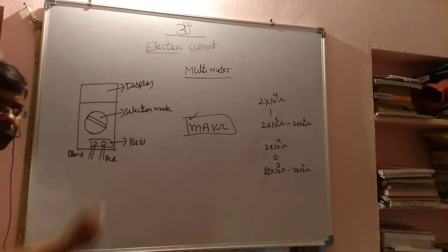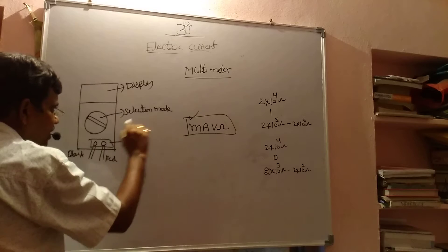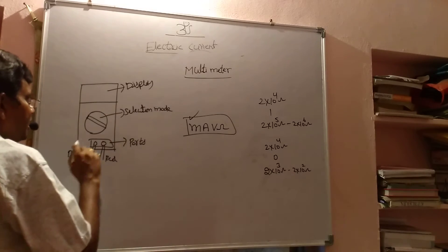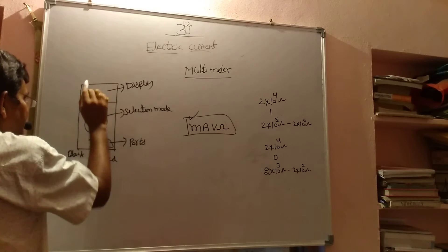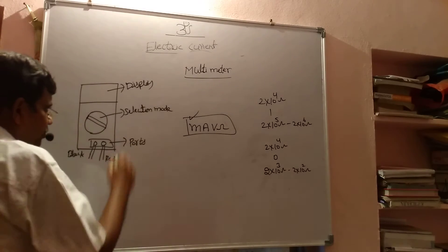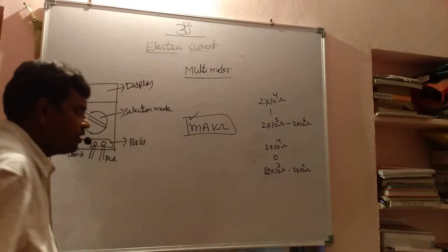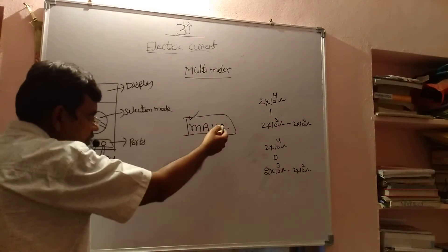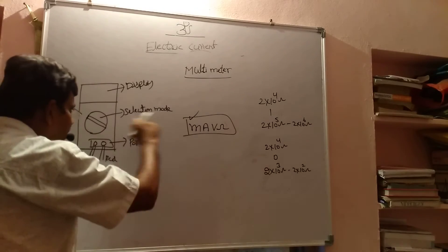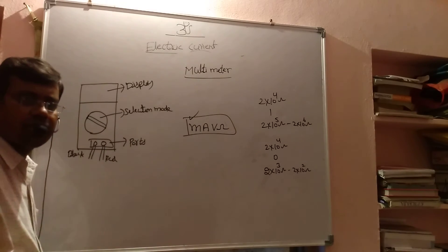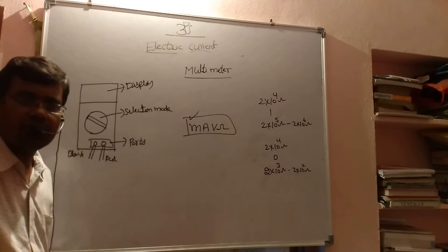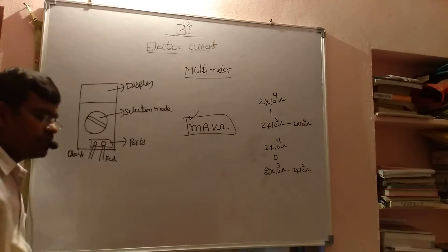Now in this multimeter there are three parts: one is the display, another is the selection mode, and the third is ports. In the display, four digits come with a negative sign. In selection mode we have milliammeter, voltmeter, and ohm. If you want to measure electric current, adjust to milliammeter. If you want to find the potential difference, adjust to volt. If you want to find the resistance, adjust to ohm.